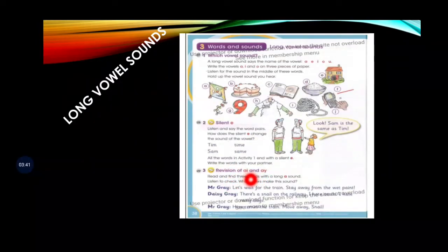Now revision of AI and AY - this is what we had done in class one. Read and find three words with a long 'A' sound. Listen to check what letters make this sound. Mr. Gray - A-Y. Let's wait for the train - A-I. Stay away from the wet paint - A-Y and A-Y is creating the long vowel sound.